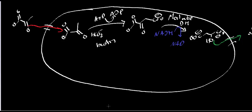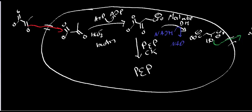In the second pathway, oxaloacetate can instead react with a mitochondrial PEP carboxykinase. This mitochondrial PEPCK generates phosphoenolpyruvate inside the mitochondria. It turns out that phosphoenolpyruvate also has transporters in the mitochondrial membrane, so PEP can exit the mitochondria and go directly into the cytosol.